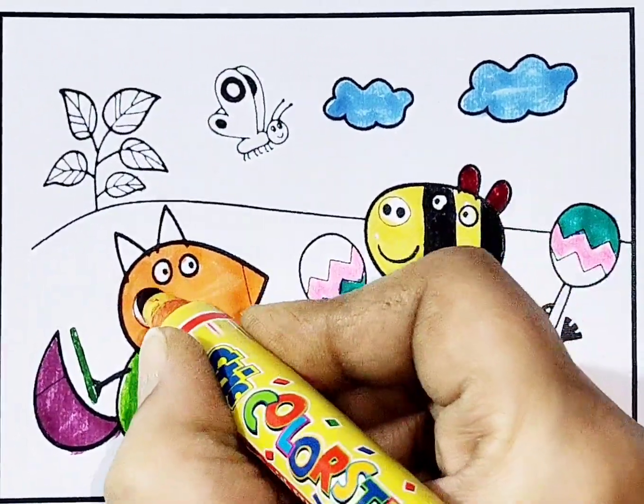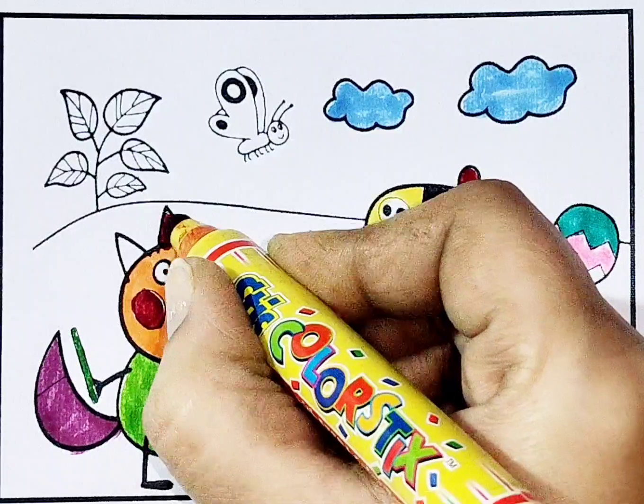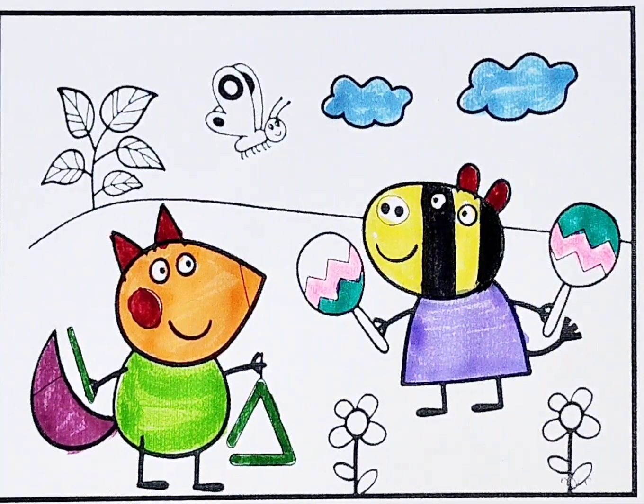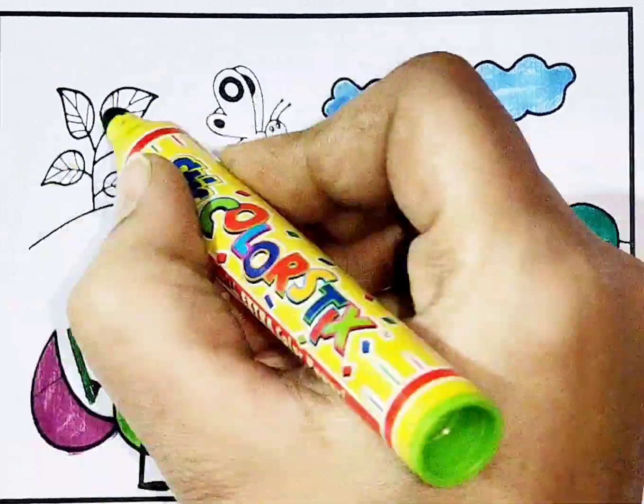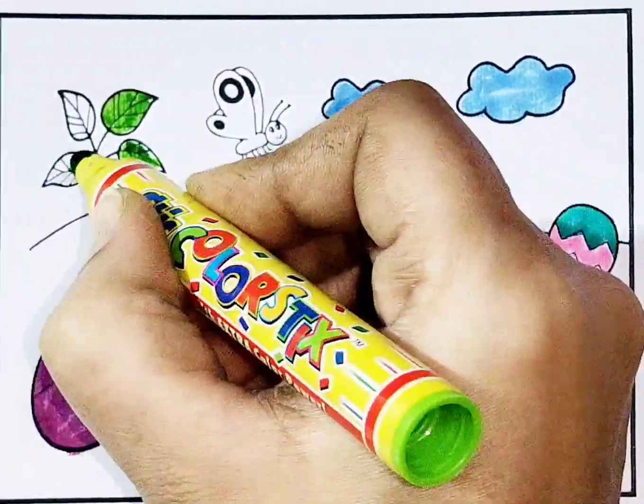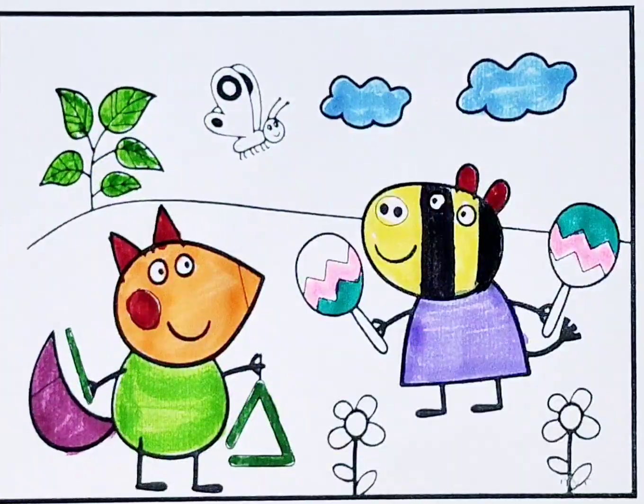And if that dog named Grover won't bark, Mama's gonna buy you a horse and cart. And if that horse and cart fall down, you'll still be the sweetest little baby in town.